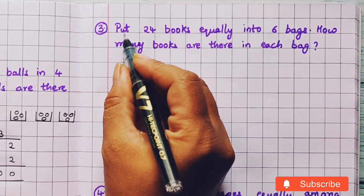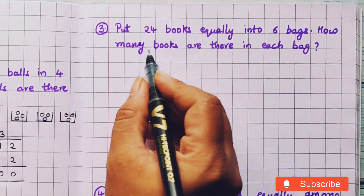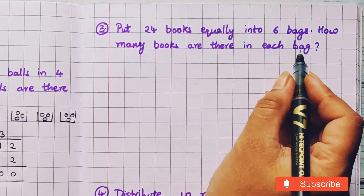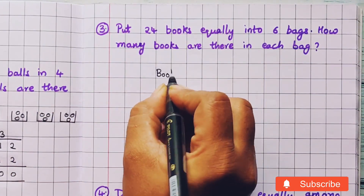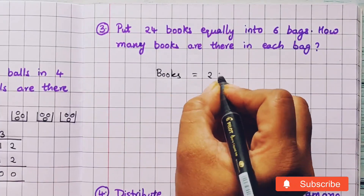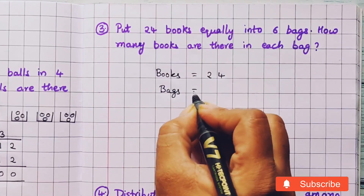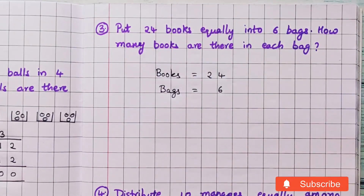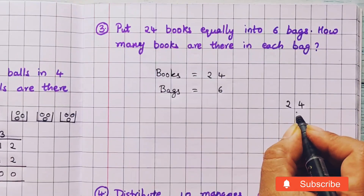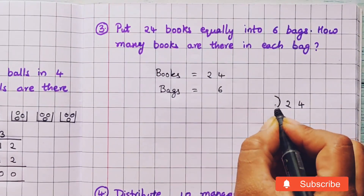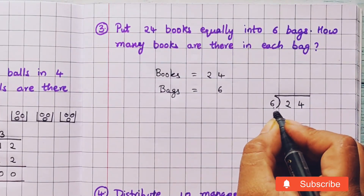Now let's do the next problem. Put 24 books equally into 6 bags. How many books are there in each bag? First let's write the total number of books — there are 24 books. And how many bags? The number of bags is 6. So, 24 books are going to be divided into 6 bags. 24 divided by 6.